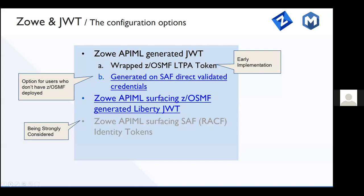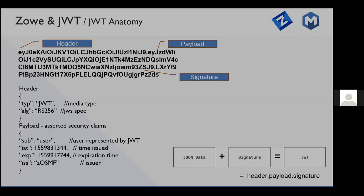There are a couple of ways to set up tokens in Zoe. In all these use cases, the client side doesn't really have to care where the tokens are coming from. For sysprogs, there is an option that does not require ZOSMF to be deployed, in which case the API ML gateway provides a token on the SAF call. The Zoe API ML squad is also looking at adding support for SAF identity tokens, which are issued, validated, and managed directly by z/OS ESM SAF.